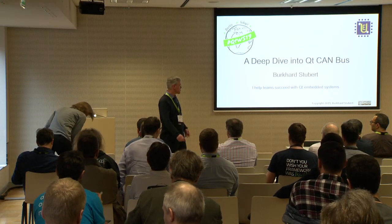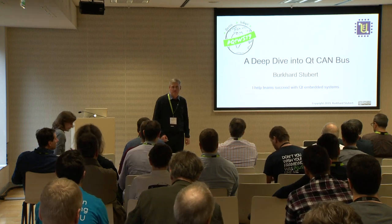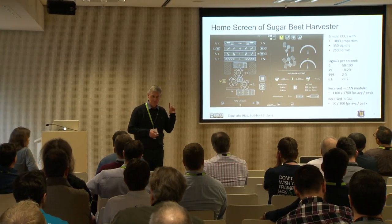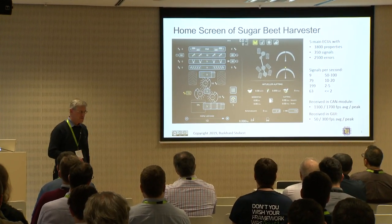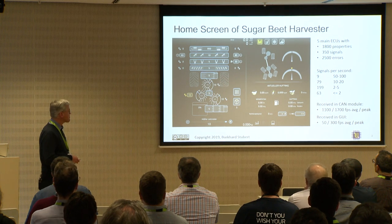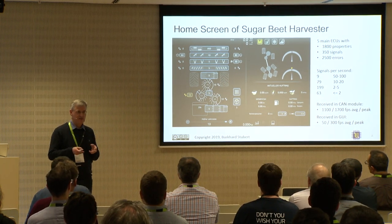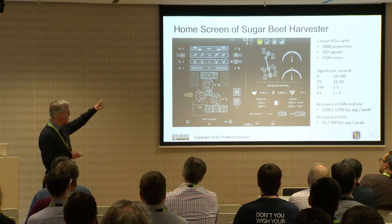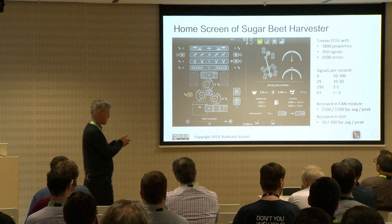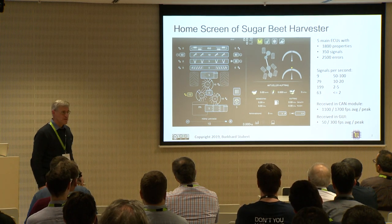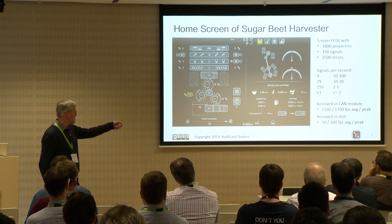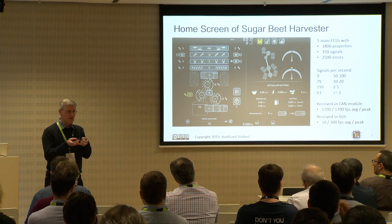Good afternoon and welcome to a deep dive into controller area networks with Qt. Here you see the home screen of a sugar beet harvester, which you could watch in the field this autumn for the first time — a real-life example. The home screen receives roughly 50 CAN frames per second and has to display that information either numerically or graphically. Every number and even the axle positions of the harvester schematic are extracted from CAN frames.